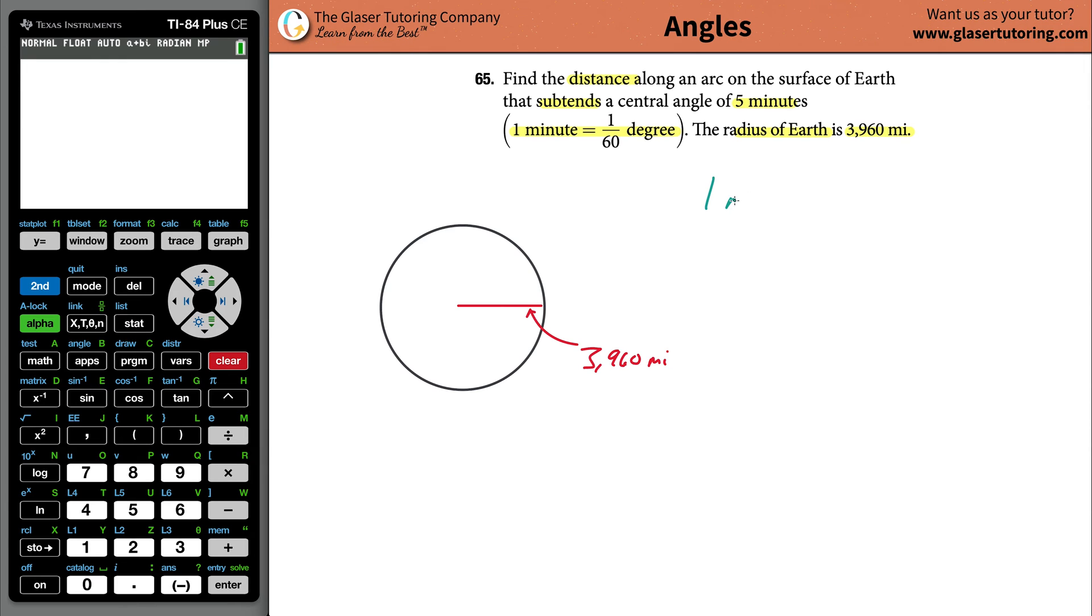If one minute equals one-sixtieth of a degree, then five minutes must equal x degrees. Notice how the minutes would cancel out and degrees would cancel out, so literally you're left with this math. Erase it. So one-fifth equals one-sixtieth over x.